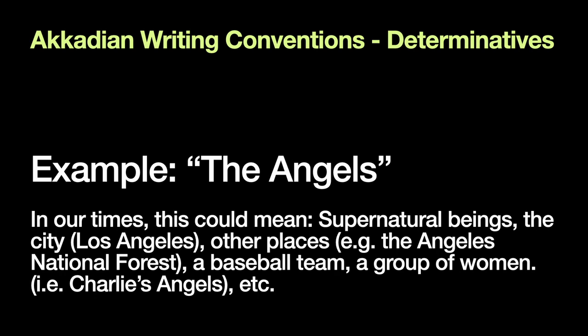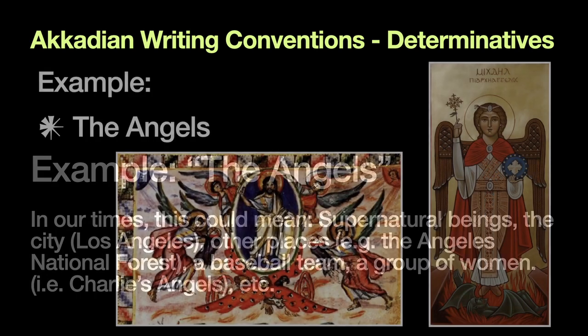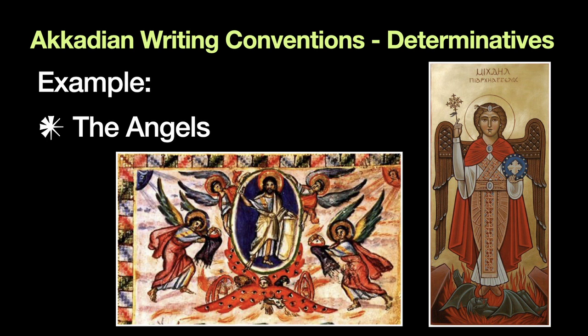So let's look at some Akkadian determinatives in front of these words that we have in English. Humor me when it comes to using the Spanish 'Los Angeles' when we want to reference the city. If we're referring to the heavenly beings, we're going to use this symbol that looks like a starburst to the left of the word 'angels.' If you see that symbol in front of the word, you know that the angels being spoken of here are the luminous beings. That's a picture of a star, or the sky, heaven, as it were.